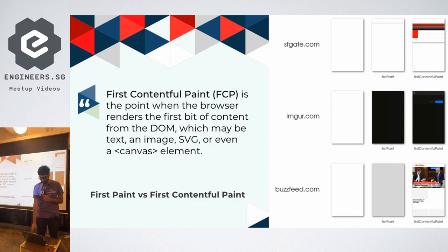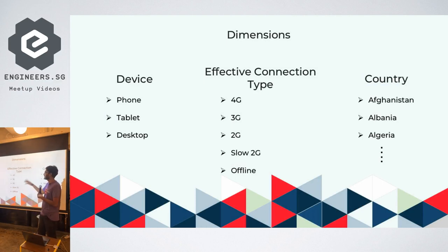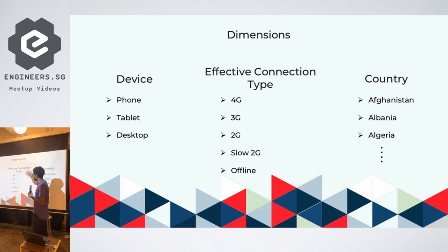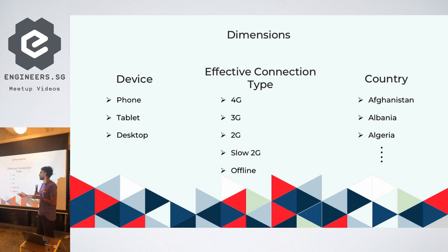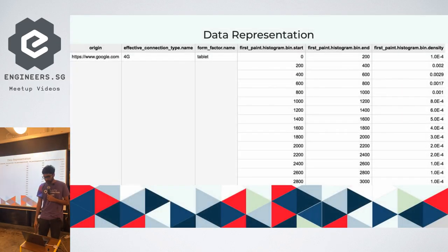These four metrics — OnLoad, First Contentful Paint, and First Paint — can be queried across different dimensions: the type of device the user is on, the type of network connection using the Network Information API (Chrome-only, but that's fine since the dataset is Chrome-only), and even for offline users. You can also slice by country.